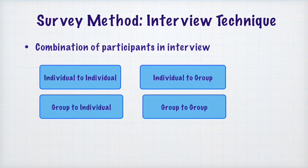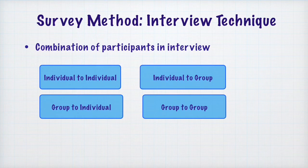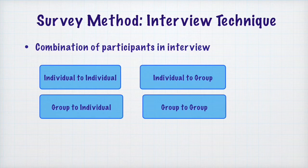Interview situations can have four combinations of participants. One: individual to individual, where one person interviews another. Two: individual to group, where one individual asks questions to a group. Three: group to individual, where a group of people interviews a single individual — for example, a job interview panel. Four: group to group, where a group of people interviews another group. These are the four combinations of participants in an interview situation.